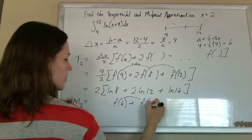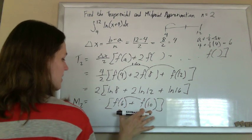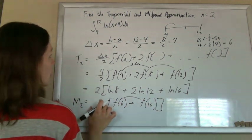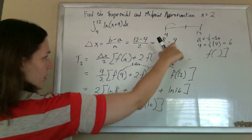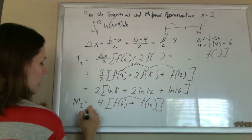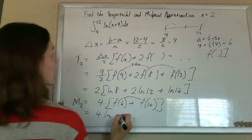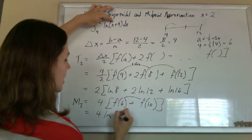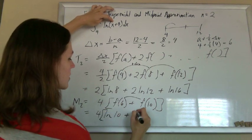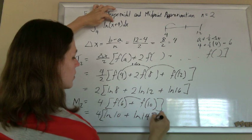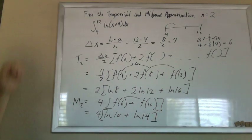So delta x is 4, so 10. Those are the heights of your two rectangles multiplied by the width. It's 4. So this is 4 times the ln of 10 plus the ln of 14. Lucky.